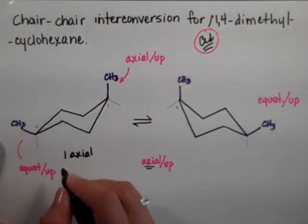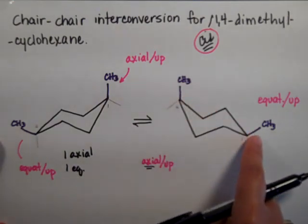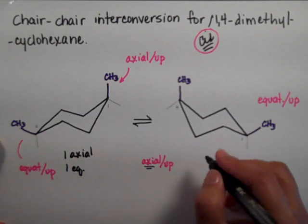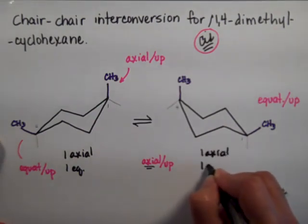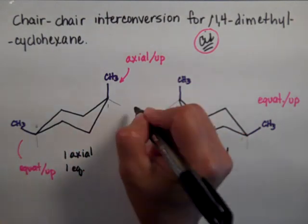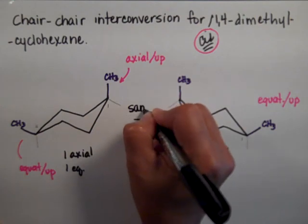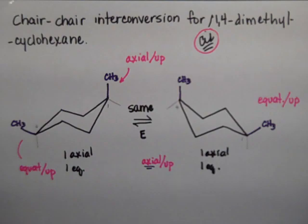I have one axial and one equatorial. And this one, I have one axial and one equatorial as well. So in terms of this cis-1,4-dimethyl cyclohexane, both chairs are going to have the same energy. Alright, that's it. That's how we do it.